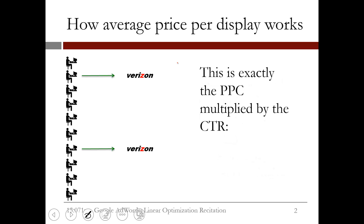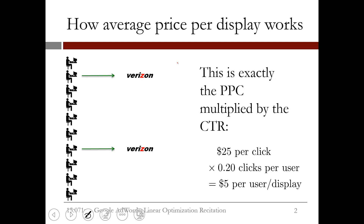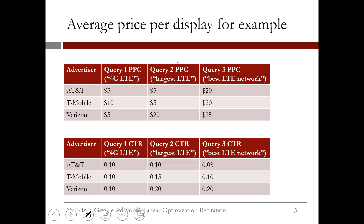We could have obtained this amount in a simpler way. As we defined in the previous slide, this turns out to be exactly the same as the price per click multiplied by the click-through rate. For our data, to obtain the average price per display, we simply need to multiply the price per click table and the click-through rate tables together.